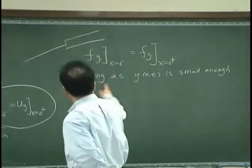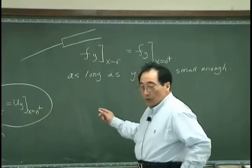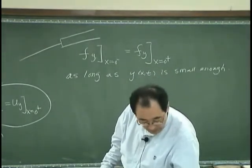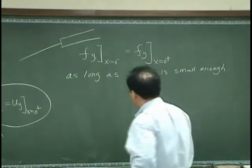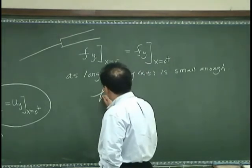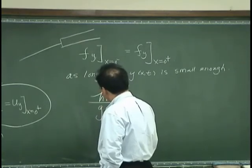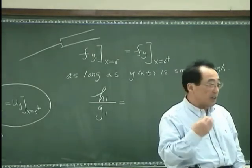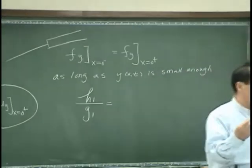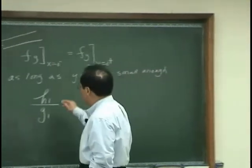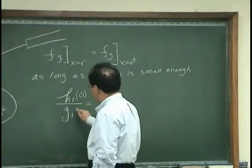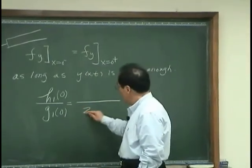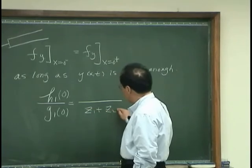Okay. Using these two boundary conditions, we come up with a very interesting result that says that the ratio between G1 and H1, in other words, how much reflection I will get compared with the instant magnitude of instant wave at x equals 0, is equal to the following interesting expression.